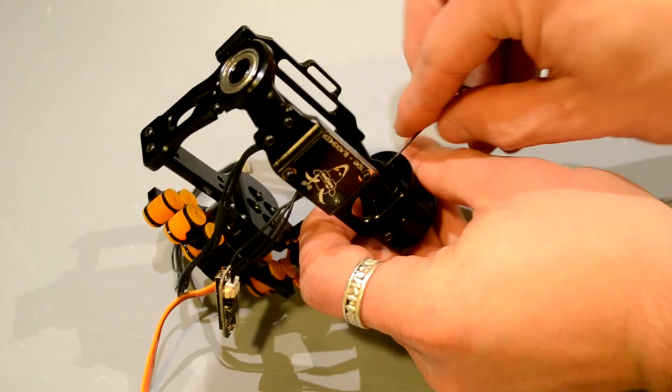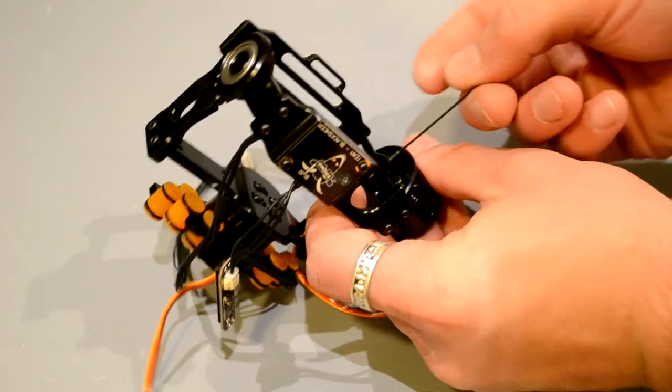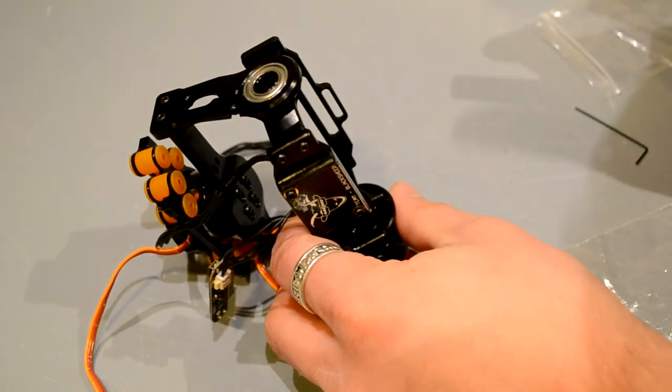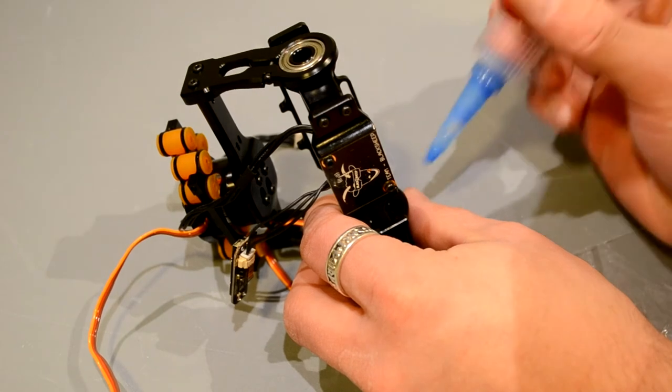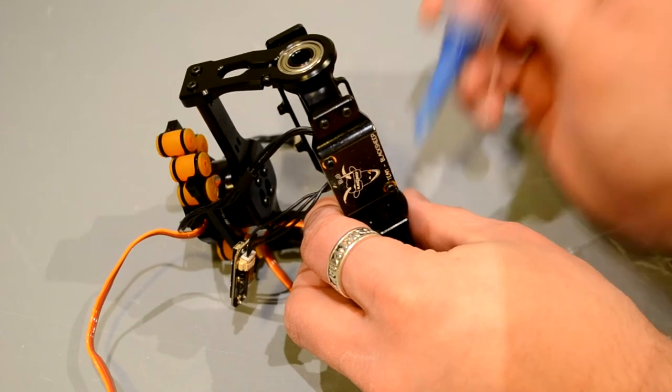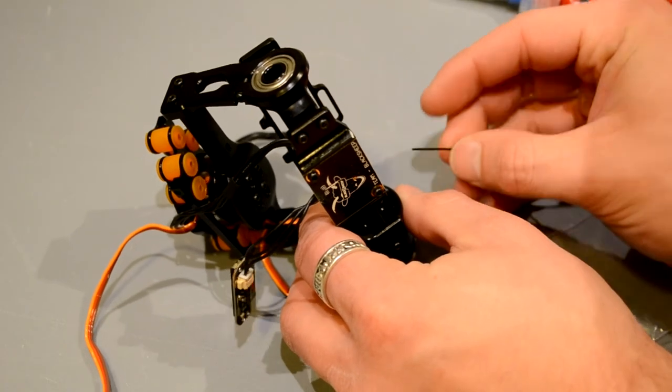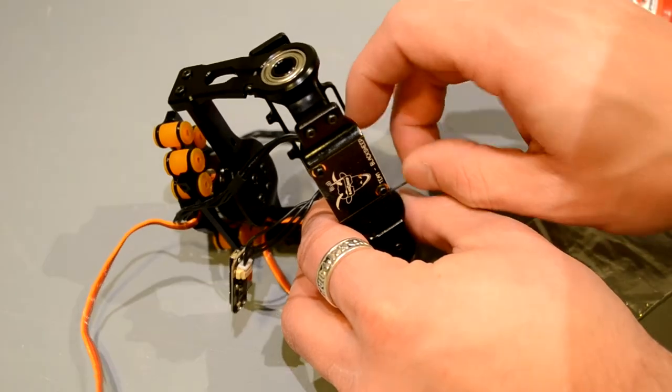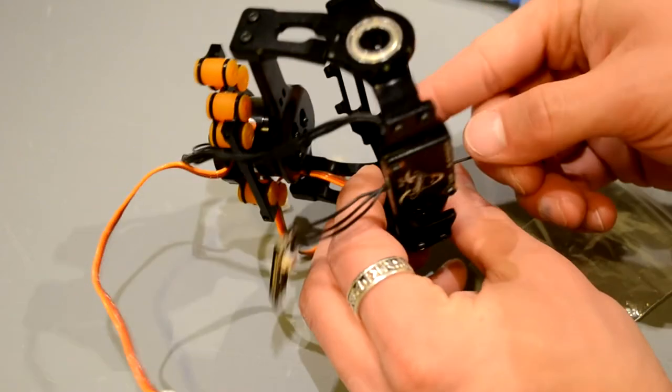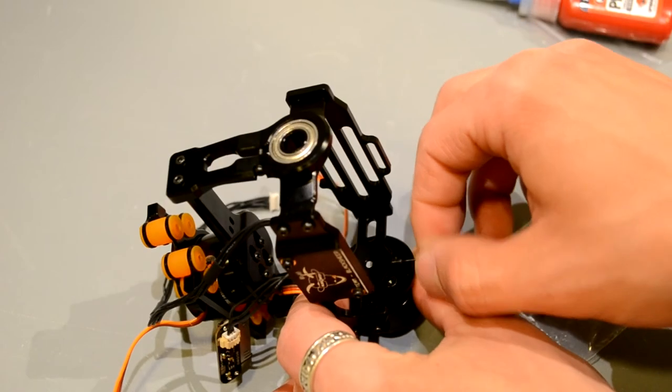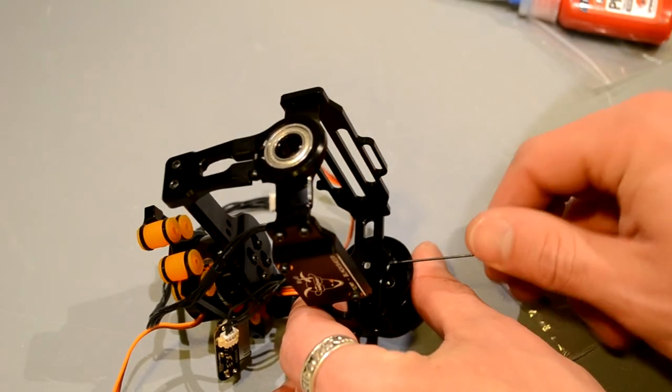Make sure that the grub screw is hitting the flat spot on that gimbal motor. Always, always, always, or it'll slip past the grub screw. And I'm going to put that in most of the way before I dab just a tiny bit of thread locker on it.